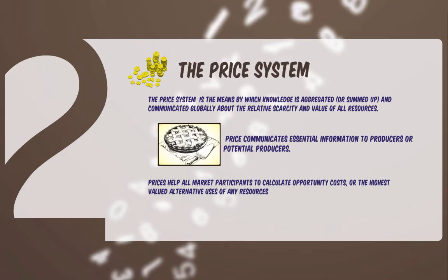All costs are opportunity costs, meaning the cost of a resource as expressed in the price determines how resources should be used. When resources are used for one purpose — berries for pies, for example — then the same resource cannot be used for another purpose, say berries for jam. Or think of aluminum used to make a can of soda: the cost of one ton of aluminum can be used to make 10,000 Coca-Cola cans, which can be expressed as the alternative cost of 20,000 rolls of baking foil. So prices are an essential feature in the crux of a free and voluntary exchange process.